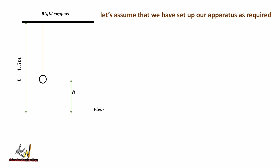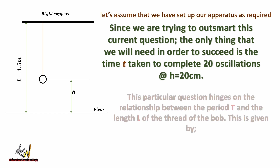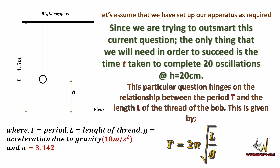Let's assume that we have set up our apparatus as required. Since we are trying to answer this question, the only thing we need is the time taken to complete 20 oscillations. This practical hinges on the fact that the relationship between the period and the length of the thread of a pendulum is given by the formula T = 2π√(L/g), where T is the period, L is the length of the thread, g is the acceleration due to gravity with a value of 10 m/s², and π is taken as 3.142.